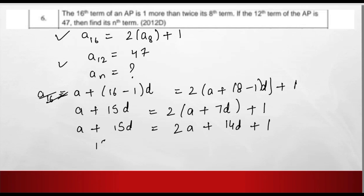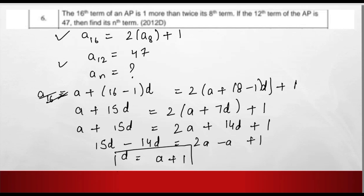Now, 15d minus 14d equals 2a minus a plus 1. So 15 minus 14 gives d on the left side, and 2a minus a gives a on the right. Therefore, d equals a plus 1.